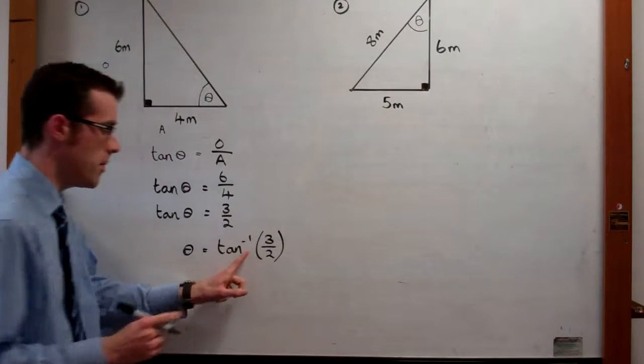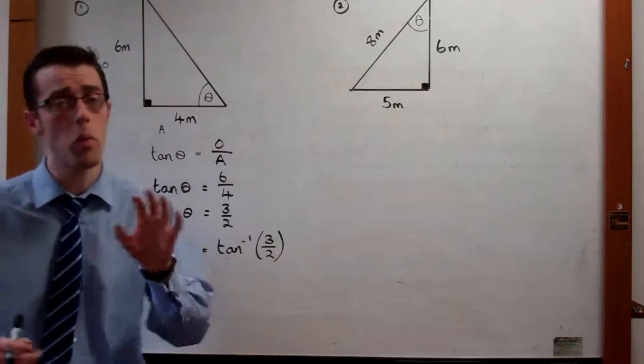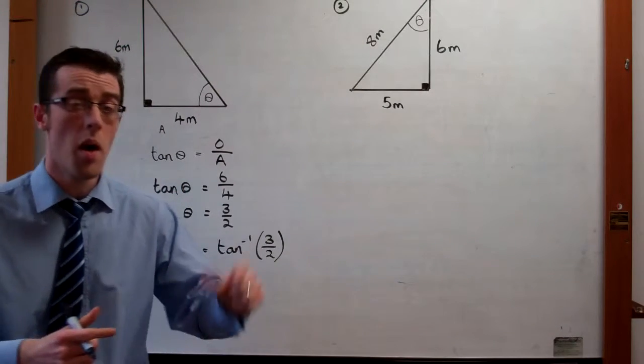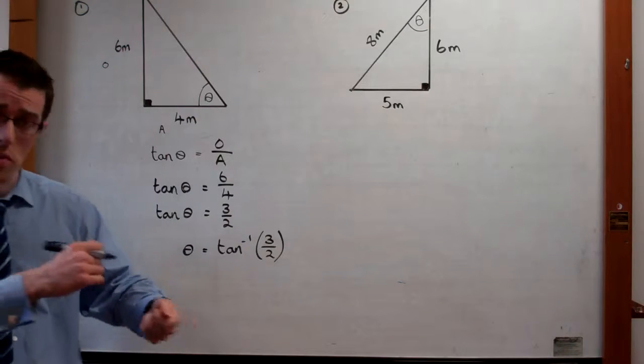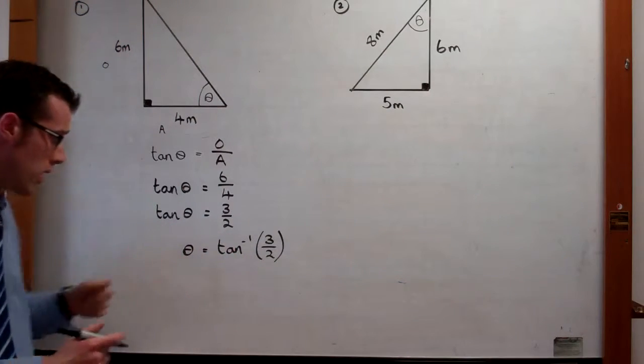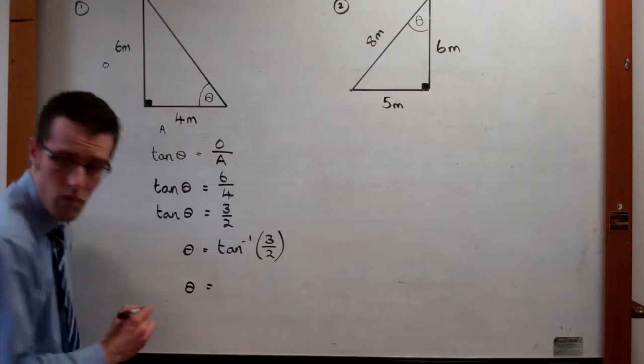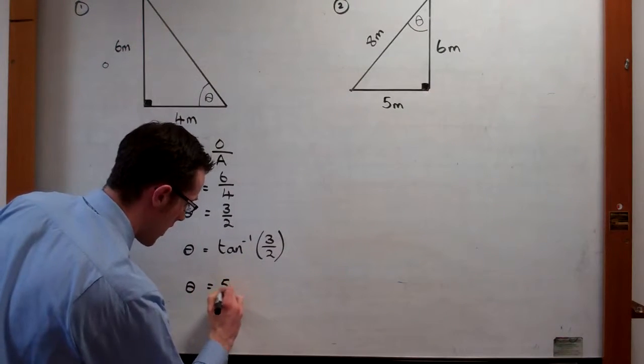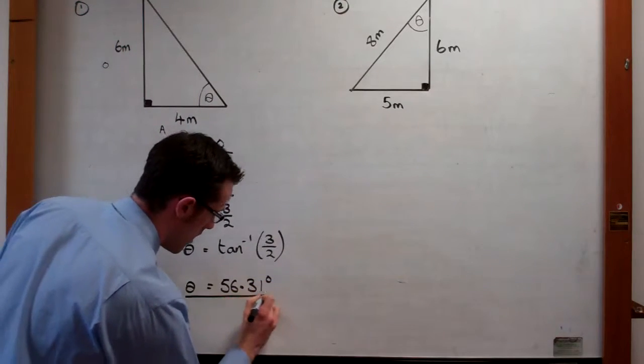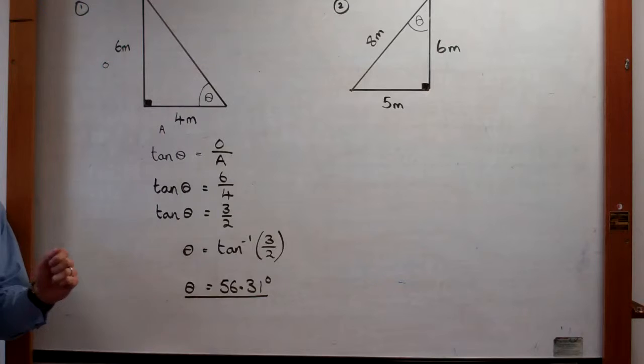Now, what that means is inverse tan. Remember we did converse of Pythagoras - converse was sort of like backwards, but inverse is actually doing something backwards in math. So this is actually taking the tan off, and the answer that we get comes to 56.31 degrees, rounded to two decimal places.